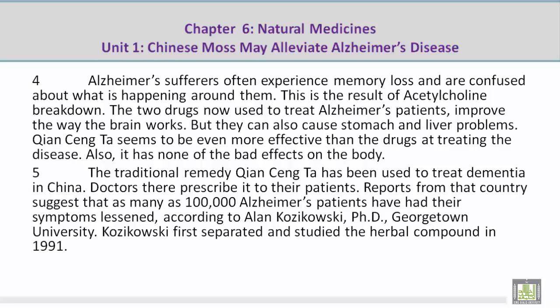Paragraph 4. Alzheimer's sufferers often experience memory loss and are confused about what is happening around them. This is the result of acetylcholine breakdown. The two drugs now used to treat Alzheimer's patients improve the way the brain works, but they can also cause stomach and liver problems. Qian Seng Ta seems to be even more effective than the drugs at treating the disease. Also, it has none of the bad effects on the body.